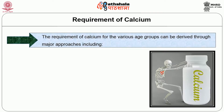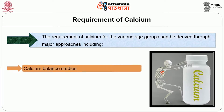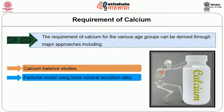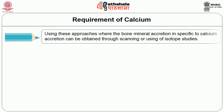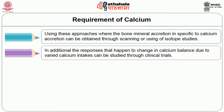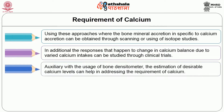Now let us see the calcium requirement for various age groups. The requirement can be derived through major approaches including calcium balance studies, a factorial model using mineral accretion data, and clinical trials. Bone mineral accretion specific to calcium accretion can be obtained through scanning or isotope studies. Responses to changes in calcium balance due to varying calcium intakes can be studied through clinical trials. Using a bone densitometer, the estimation of desirable calcium levels can help in addressing the requirement of calcium.